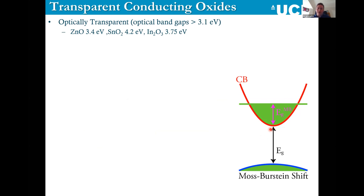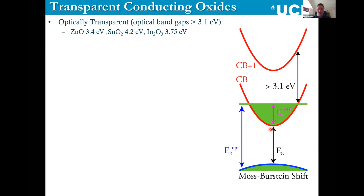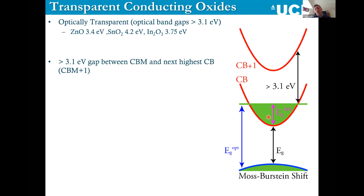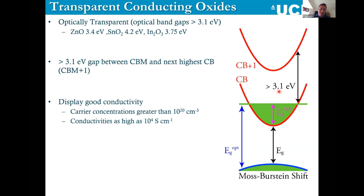For really excellent TCOs, when you dope the system with extra electrons, those electrons occupy the bottom of the conduction band up to the Fermi level — this opens up the optical band gap via the Moss–Burstein shift, giving increased optical transparency. A second caveat is that once electrons occupy the conduction band bottom, they can be excited by visible light into lower-lying conduction bands. So you also want a large separation of about 3.1 eV between the Fermi energy and the next lowest conduction band, ensuring you don't lose transparency once the material is conducting. Typically, carrier concentrations exceed 10²⁰ and conductivity reaches as high as 10⁴ S/cm.